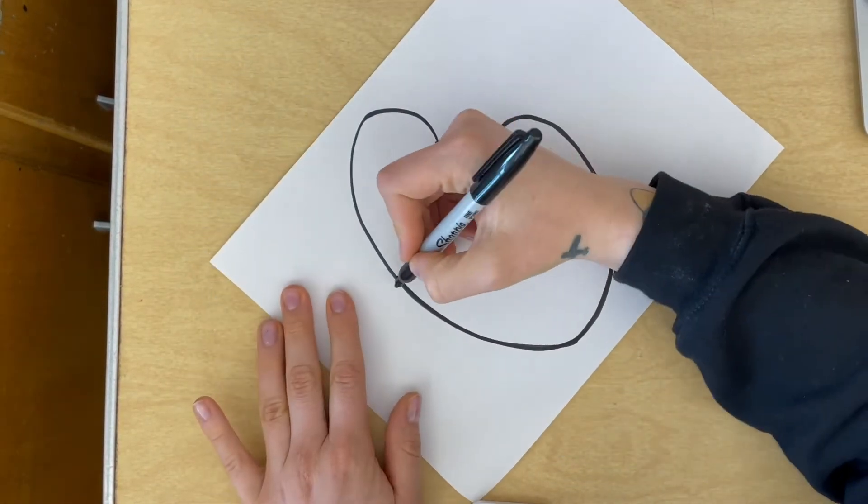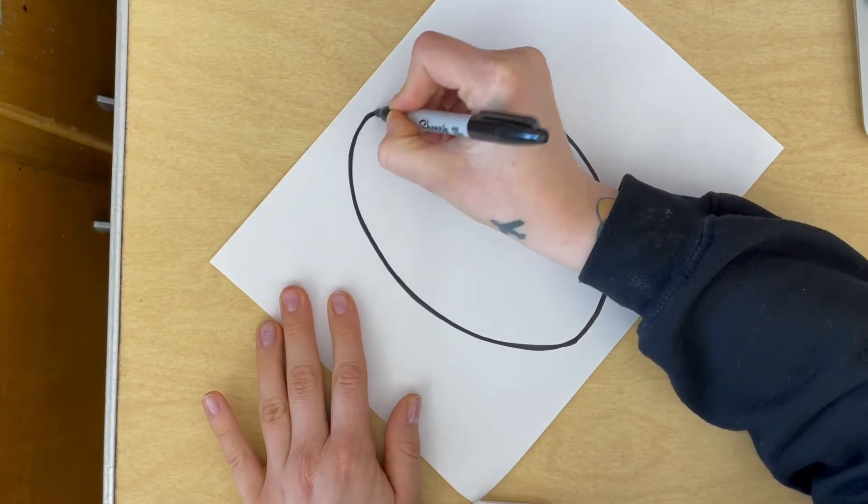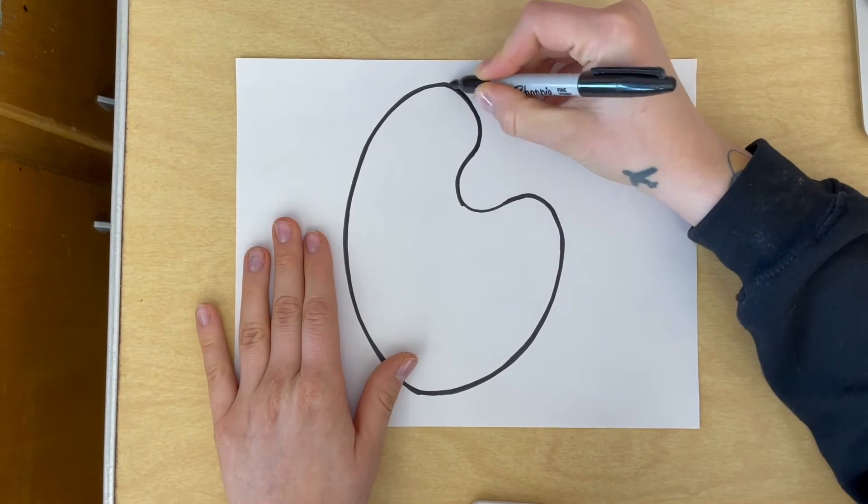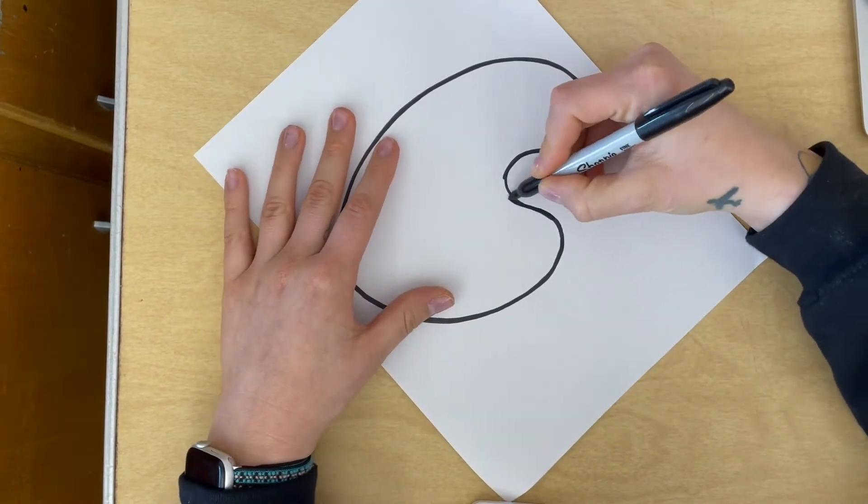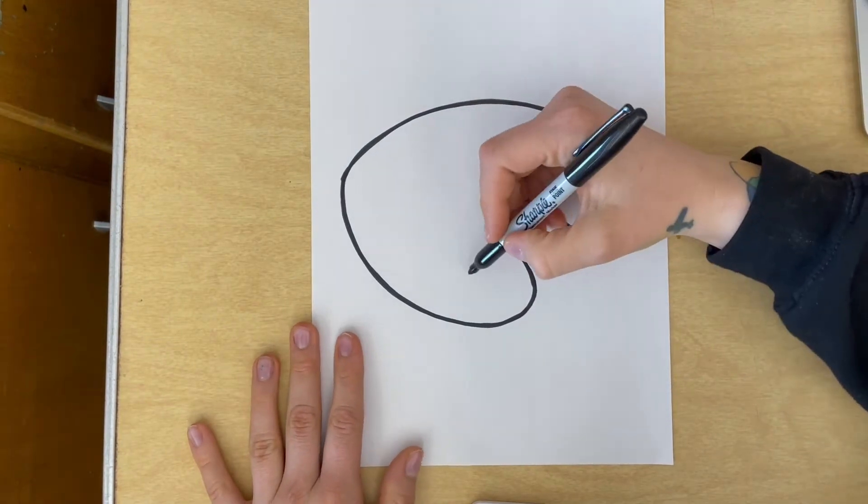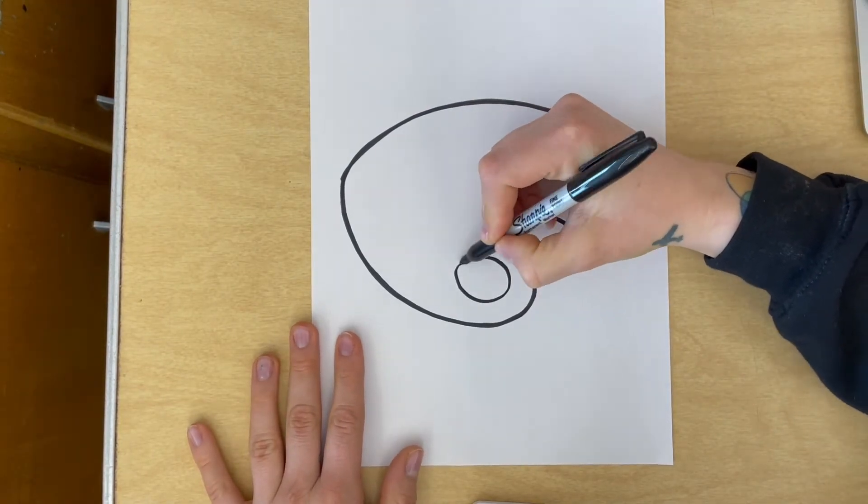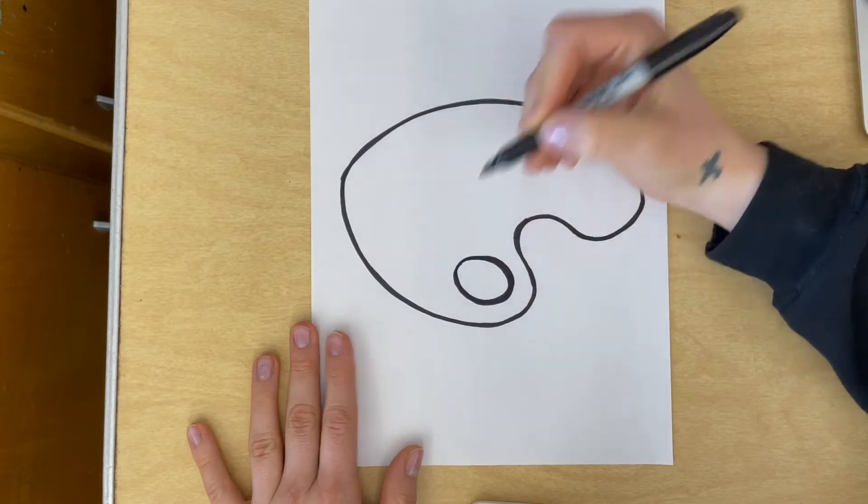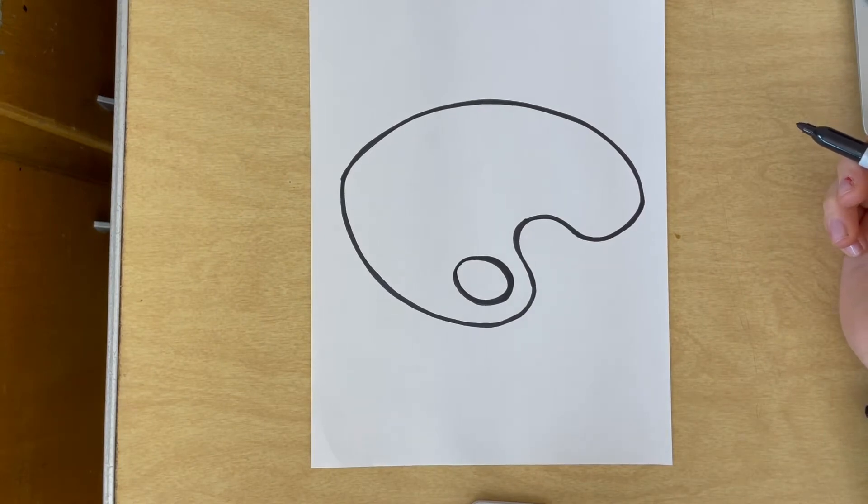I'm using a Sharpie. I suggest to you friends using a pencil first like always. Our next line is actually a shape. It's going to be a circle or oval right here, right on the bottom part of our paint palette. This is where a thumb usually goes inside to hold our paint palette.